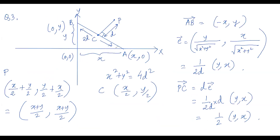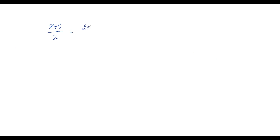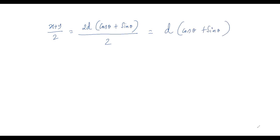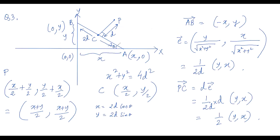To find the minimum value, we use trigonometry. Let θ be the angle, so by the projection rule: x = 2d·cosθ and y = 2d·sinθ. We need the minimum of (x+y)/2 = d(cosθ + sinθ). Since A and B lie on the positive axes, θ ranges from 0 to π/2.